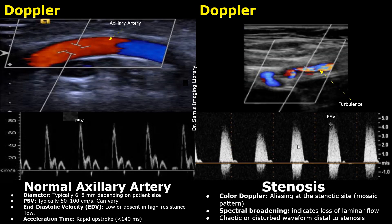In the normal image you can see a thin waveform with a sharp peak, but in this case the waveform is thick and has a blunt peak.